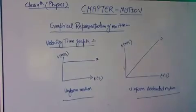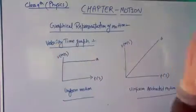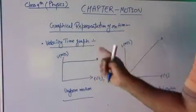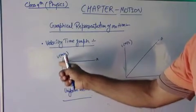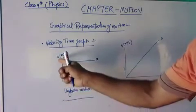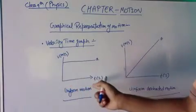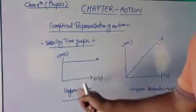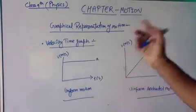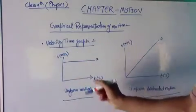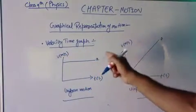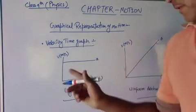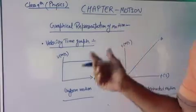Now we will discuss the second graph: the velocity-time graph. In this graph, the y-axis represents velocity in meters per second and the x-axis represents time. When you have a velocity and time graph, the slope of the graph gives us acceleration. This is an important thing to remember and recall.